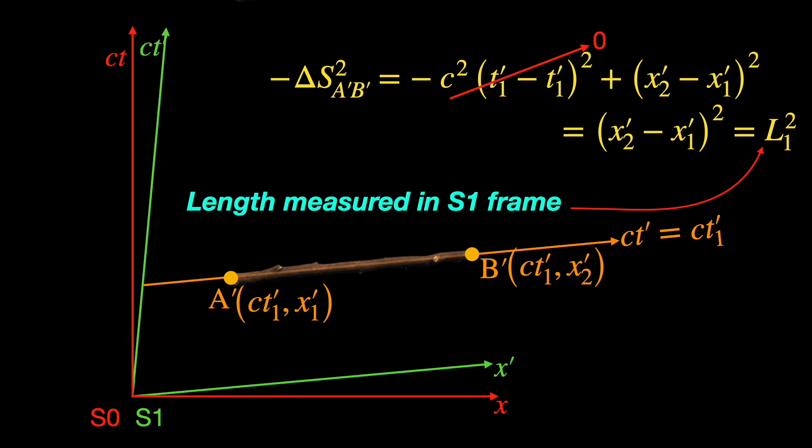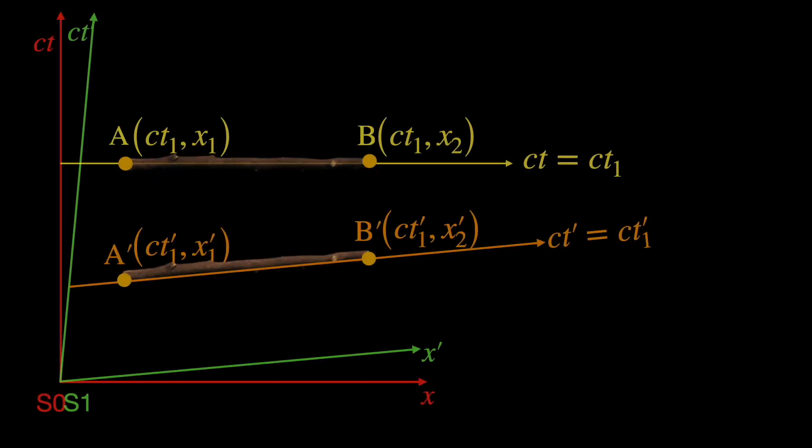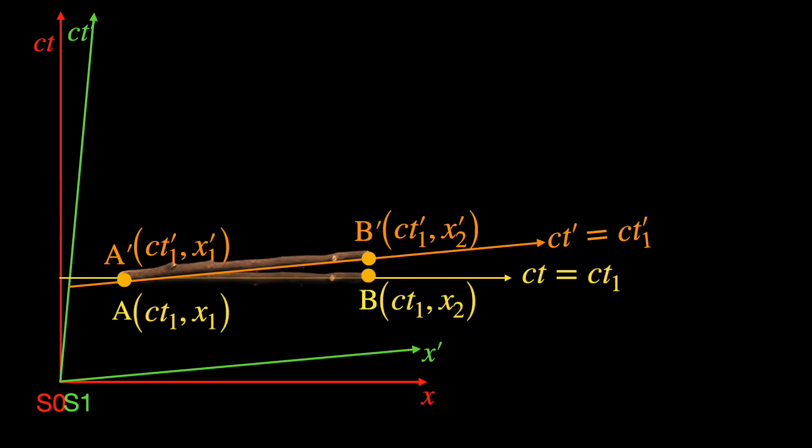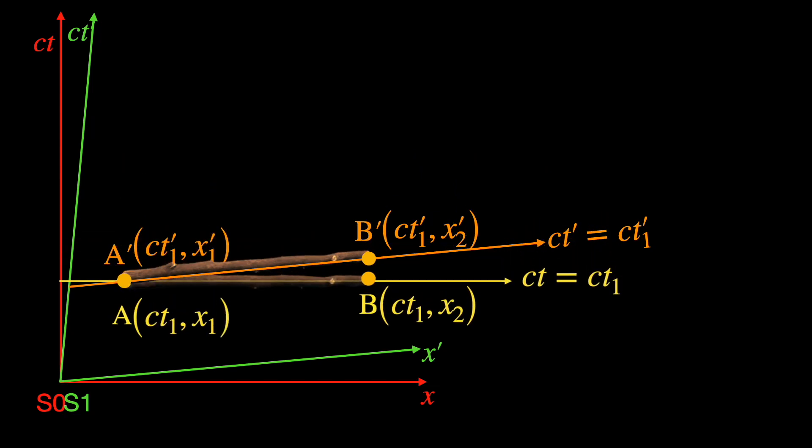We need to find how this L₁ compares to our measure length L₀, that will get us to the length contraction formula. To do this with minimum effort we can use our liberty to choose when to take the length measurement in S0, that is we choose t₁ such that events A and A' coincide. So that measuring coordinates of one side of the stick, that is one end of the stick by S0 and S1 frame observers is a single event, just refer to it as event A whose coordinate reading in S0 is (ct₁, x₁) and in S1 is (ct₁', x₁'). Note however this won't make the corresponding measurement events of the other end of the stick in the two frames, that is event B and B', coincident. This is the crux of the length contraction phenomena.